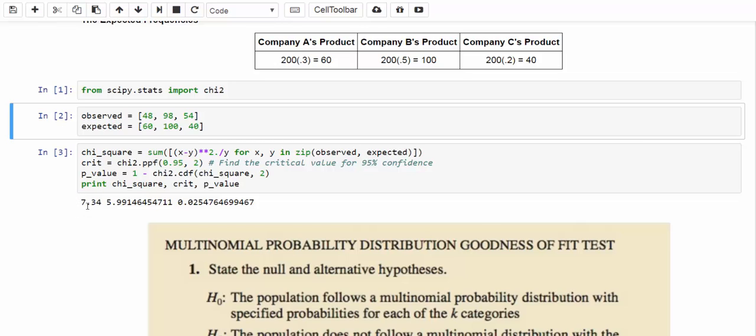Chi-square test statistic is equal to 7.34, and the critical chi-square value is 5.99, and the p-value is 2.54%, which is less than 5% of our level of significance. As a result, we can conclude that we are going to reject the null hypothesis and say that the new product indeed changes the market share.